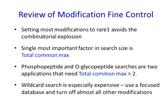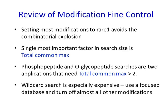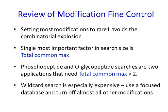Now we'll review what we learned in this tutorial. Most search engines suffer from a combinatorial explosion if more than five or six modification types are enabled at one time. Byonic overcomes this combinatorial explosion with modification fine control. Nevertheless, Byonic searches can get very large. The single most important factor in the search size is total common max — you should leave this set to two for most searches. Phosphopeptide and O-glycopeptide searches are two exceptions where you will probably want a larger total common max. Wildcard search is especially expensive; use this option only with a focused database and turn off most other modifications.